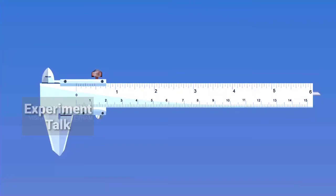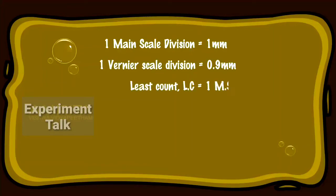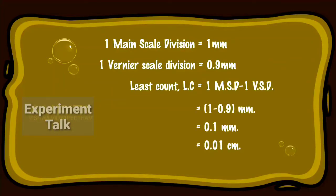First, we have to determine the least count of the given Vernier Calipers. One main scale division is equal to 1 mm. One Vernier scale division is equal to 0.9 mm. Least count LC is equal to 1 MSD minus 1 VSD, equal to 1 minus 0.9 mm, that is equal to 0.1 mm, which equals 0.01 cm.